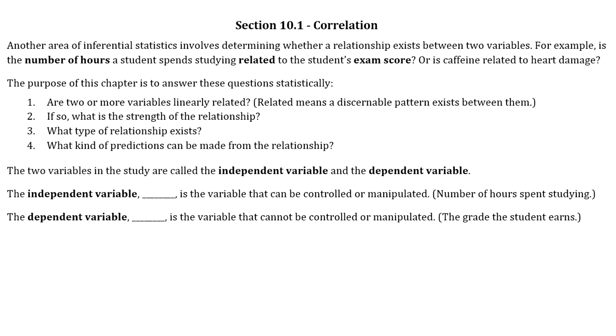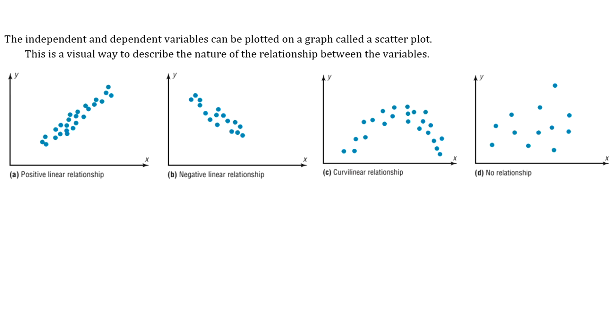The two variables in this study are called the independent variable and the dependent variable. The independent variable is X, the one that can be controlled or manipulated, like the number of hours a student spends studying. The dependent variable is Y, the one that cannot be controlled or manipulated, like the grade the student earns.